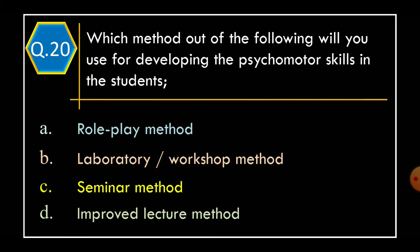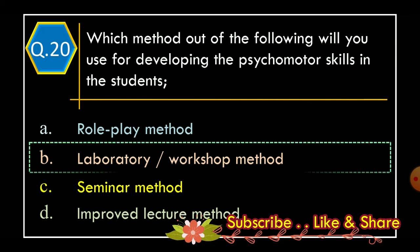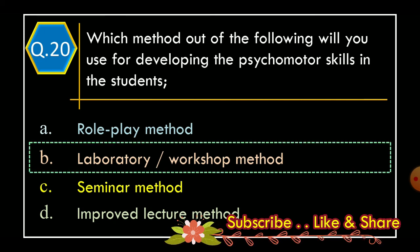Question 20. Which method out of the following will you use for developing psychomotor skills in students? Option A – Role play method. Option B – Laboratory or workshop method. Option C – Seminar method. Option D – Improved lecture method. The correct option is Option B: Laboratory or workshop method. Thanks for watching.